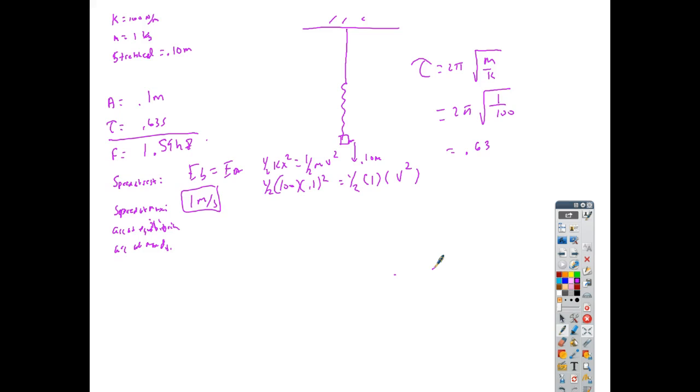What is the speed at maximum distance? It's going to be zero. Because when it gets to the very bottom and the very top, it's going to temporarily stop before it changes directions.